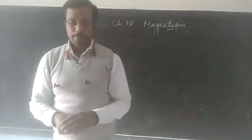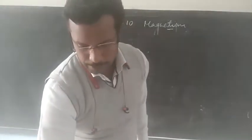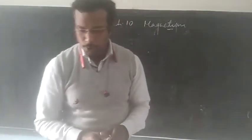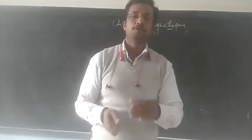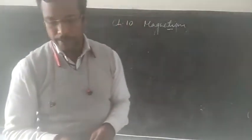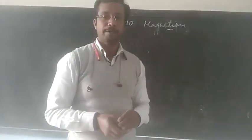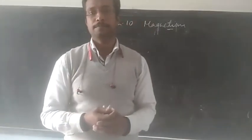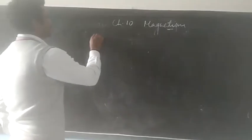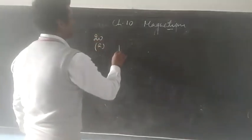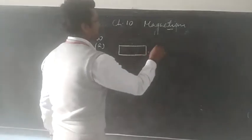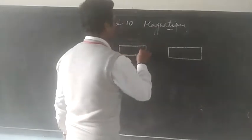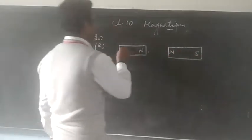Now, coming to exercise 10a, question number 20, where you have to show the magnetic field lines between two magnets. In question number 20, there are two magnets given. In the first case, you can see where the two same poles are facing each other — for example, north pole and north pole facing each other — while the other poles are south poles.